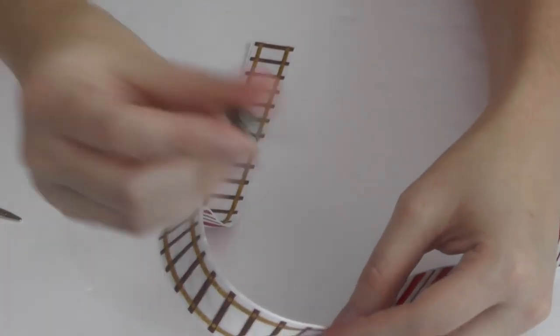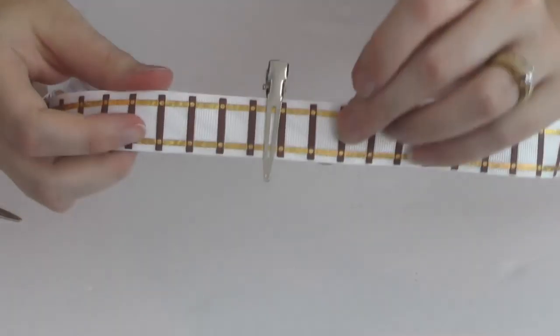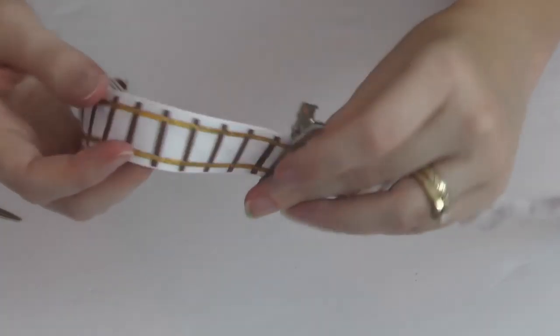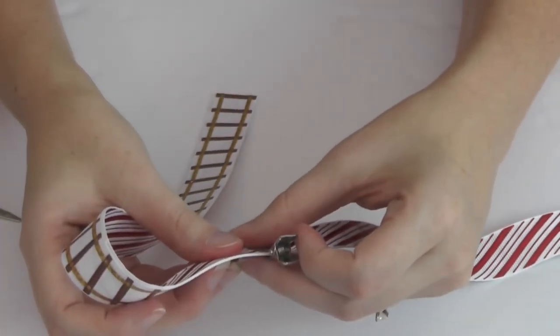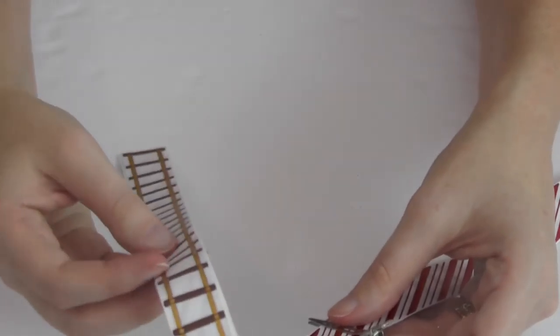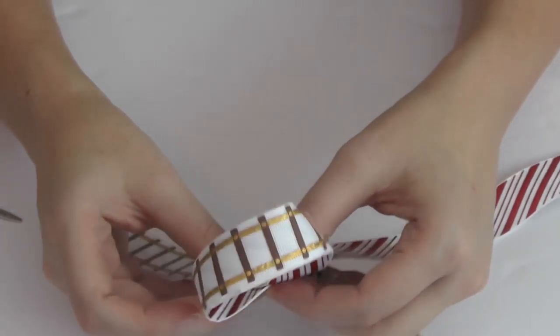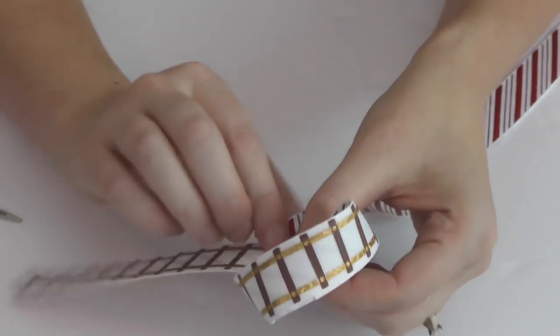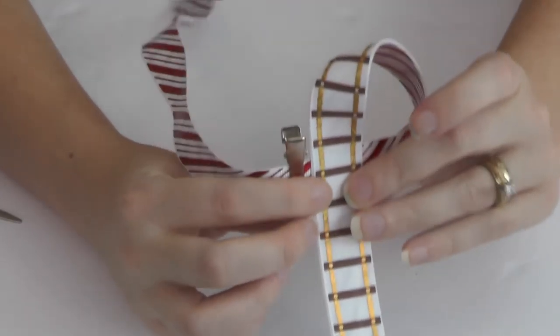You can even put a clip right there in the center to mark it for you. Just like we were making the Surround-a-bow, you're going to come and you're going to form your first loop, just like so.